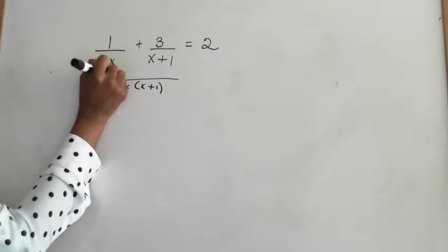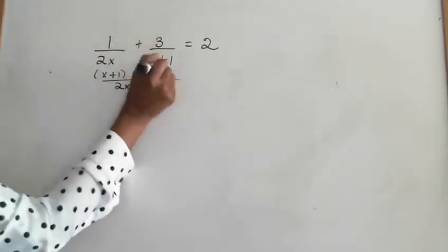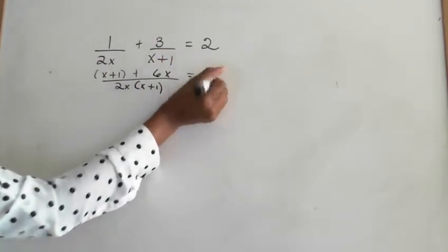2x will go into here x plus 1 times. x plus 1 will go into here 2x times. 2x times 3 is 6x, still equal to 2.